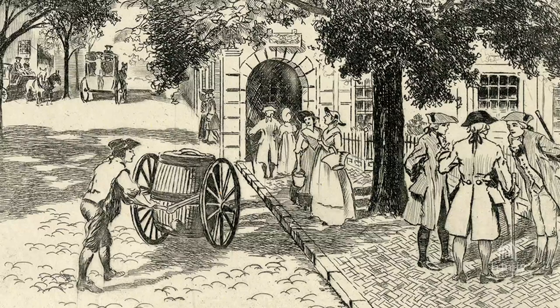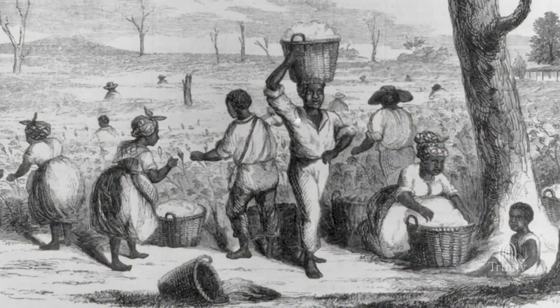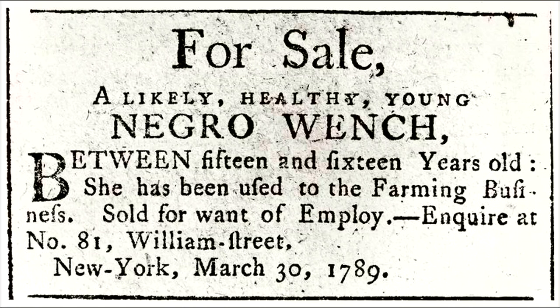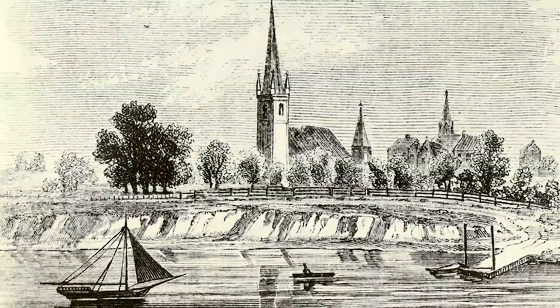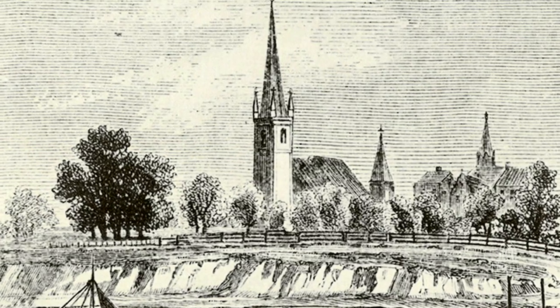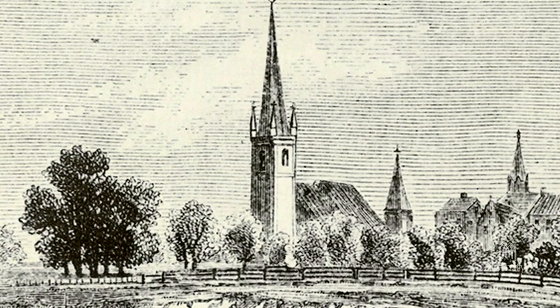By the middle of the 18th century, New York had almost the same population of enslaved Africans, percentage-wise, as Charleston, South Carolina. Since the enslavement of captured African people was such a fundamental part of life in the early days of New York City, we should not be surprised to learn that it's part of the history of Trinity Church, whose first church building was constructed in 1697.